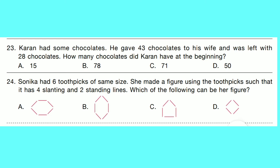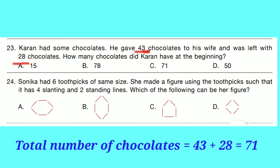Question number 23: Karan had some chocolates. He gave 43 chocolates to his wife and was left with 28 chocolates. How many chocolates did Karan have at the beginning? Adding the chocolates he gave and what was left: 43 plus 28 equals 71. Option C is correct.